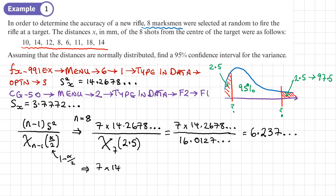Now I'm going to do the same thing to find the upper limit from my confidence interval. It's going to be the same calculation, 7 times 14.2678, divided by chi-squared, and the only thing that now changes is that 2.5 now becomes 97.5. I'm going to use the CG50 to work out what that value is. That gives me 1.6898, and I'll use those figures to work out the value for the upper limit. That gives me 59.104.